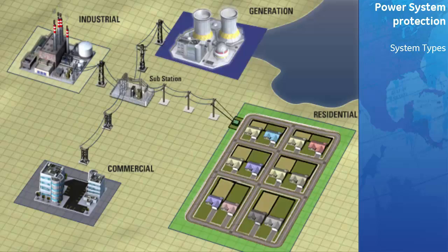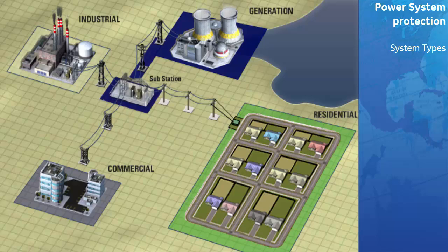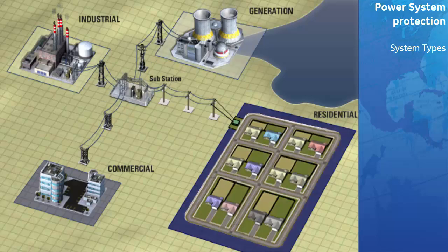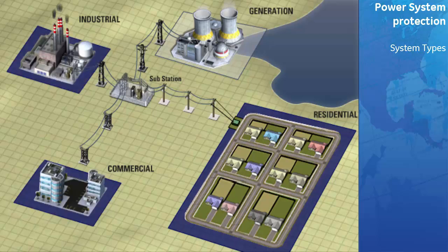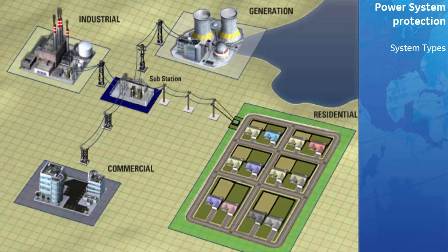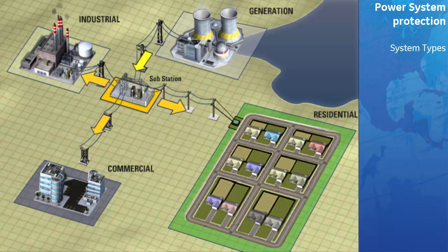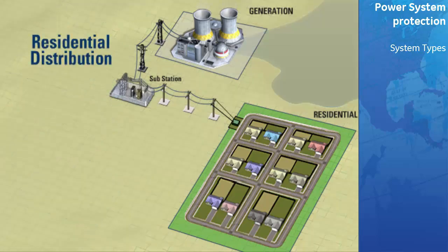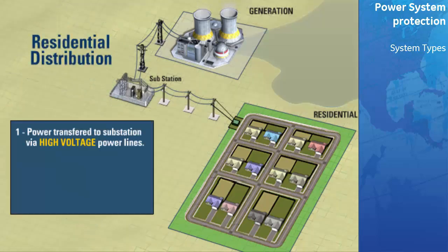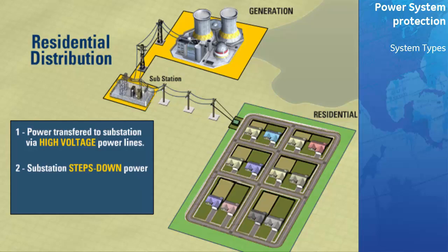The three-phase power travels from the generating station over high power lines to substations. Different voltages are required for residential, commercial, and industrial customers. And so, at substations, breakers and transformers route and step down the voltage to a suitable level for distribution. Let's take a look at a typical distribution system for a residential customer. The generated power is transmitted via high power transmission lines to a substation, where it is stepped down and routed to residential users.